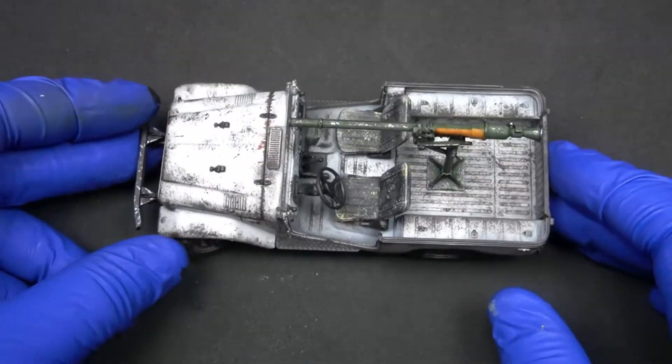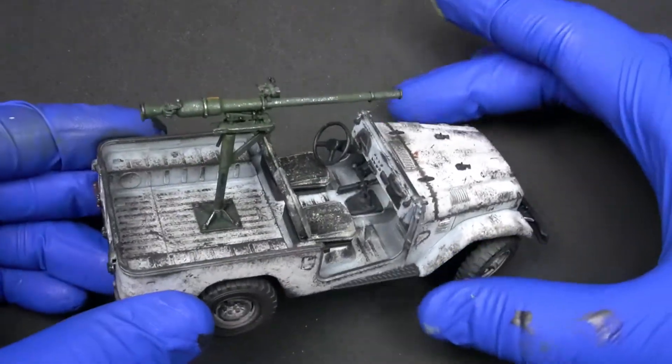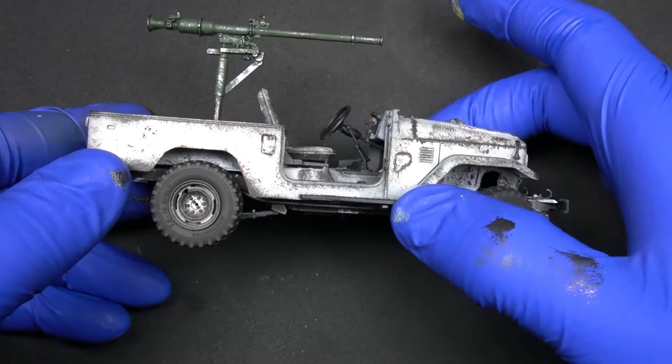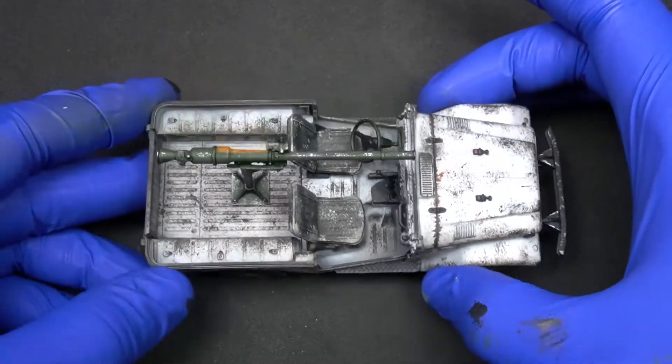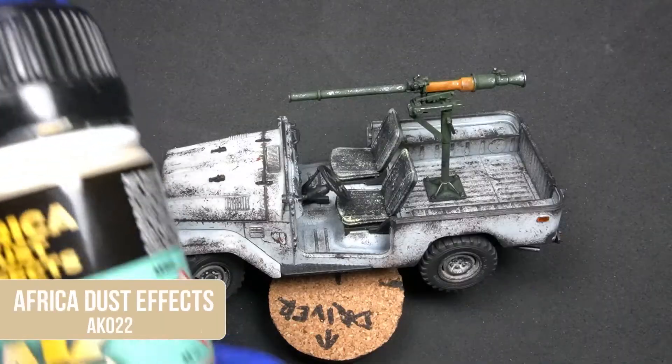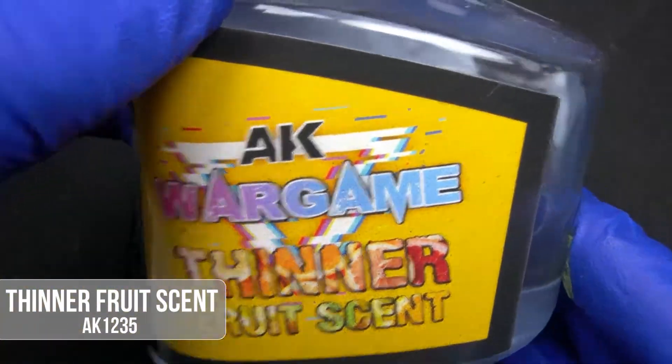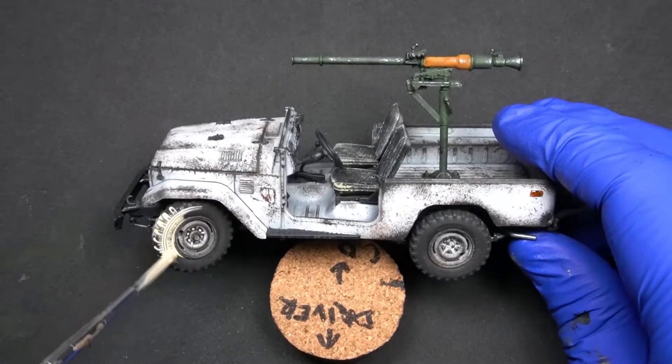Once we have placed the gun inside the vehicle, our model would be almost finished. But at this point, don't you think that our pickup is missing something to be a true guerrilla car? You're right! We need dust.